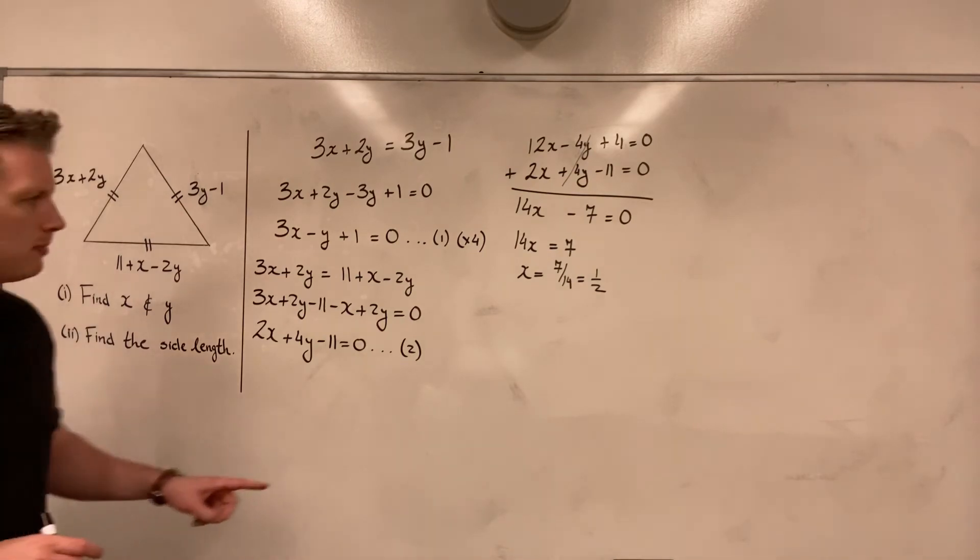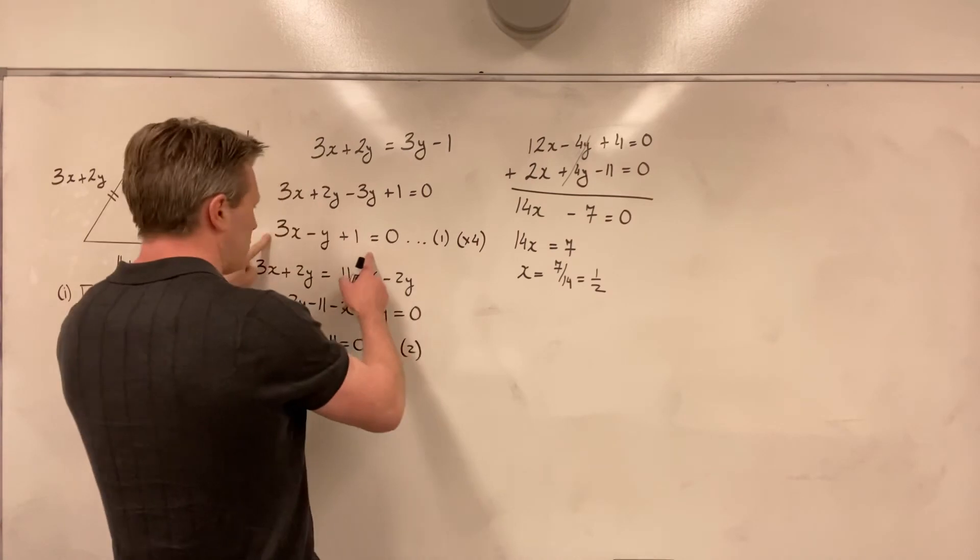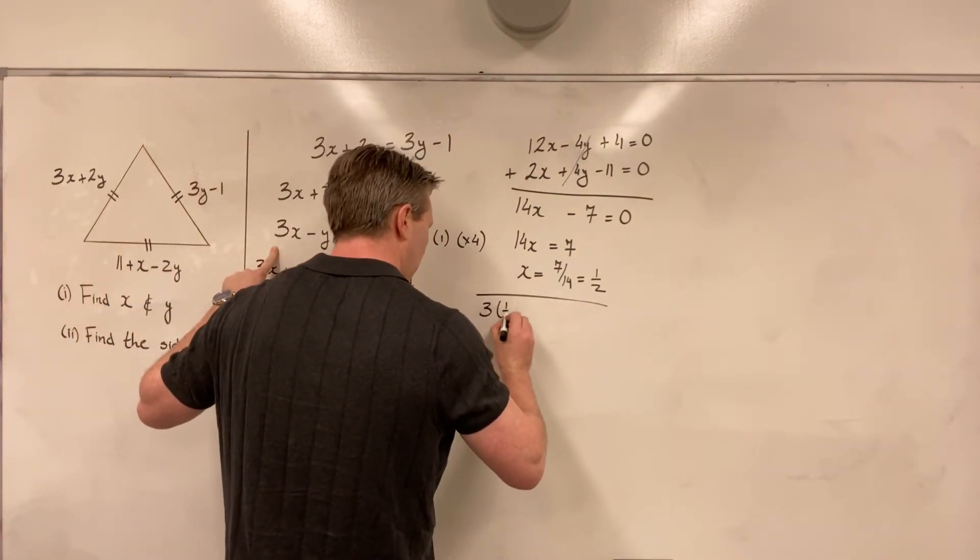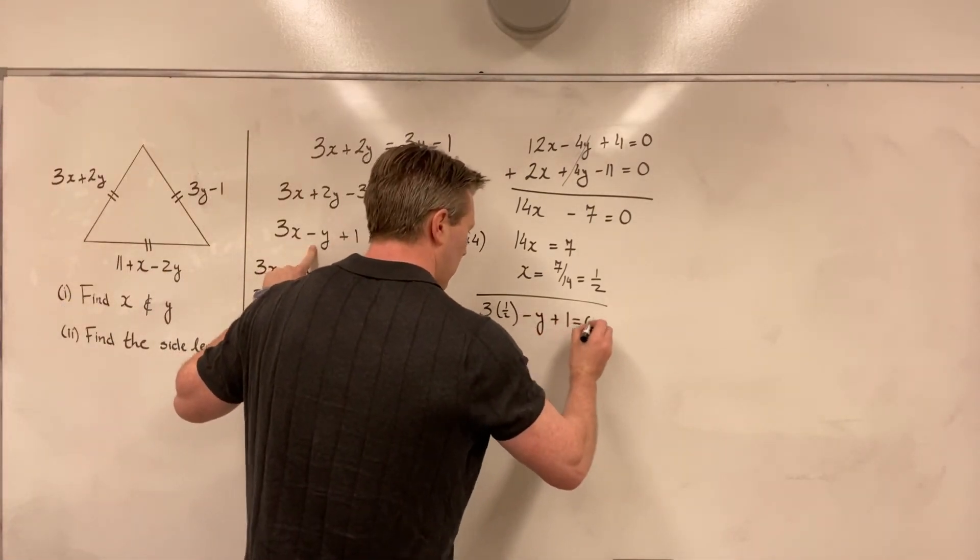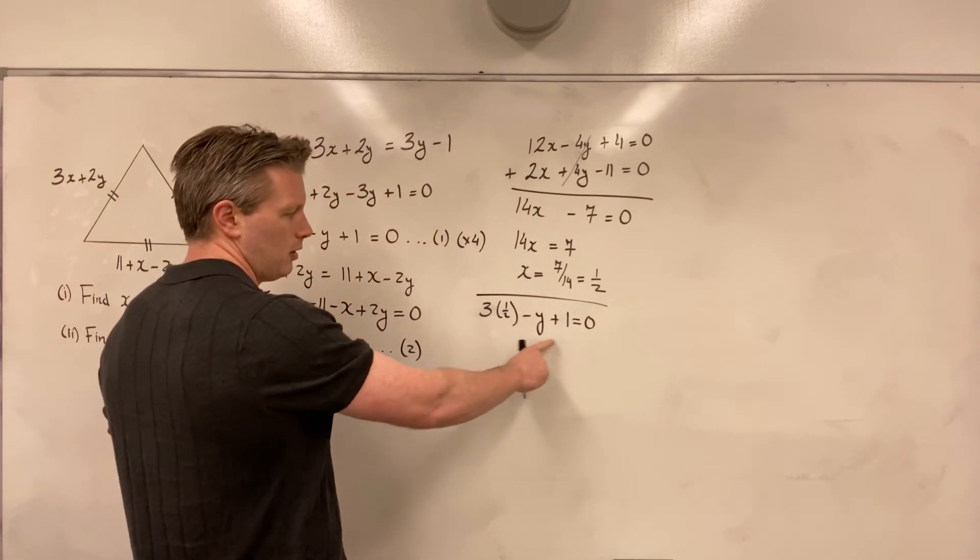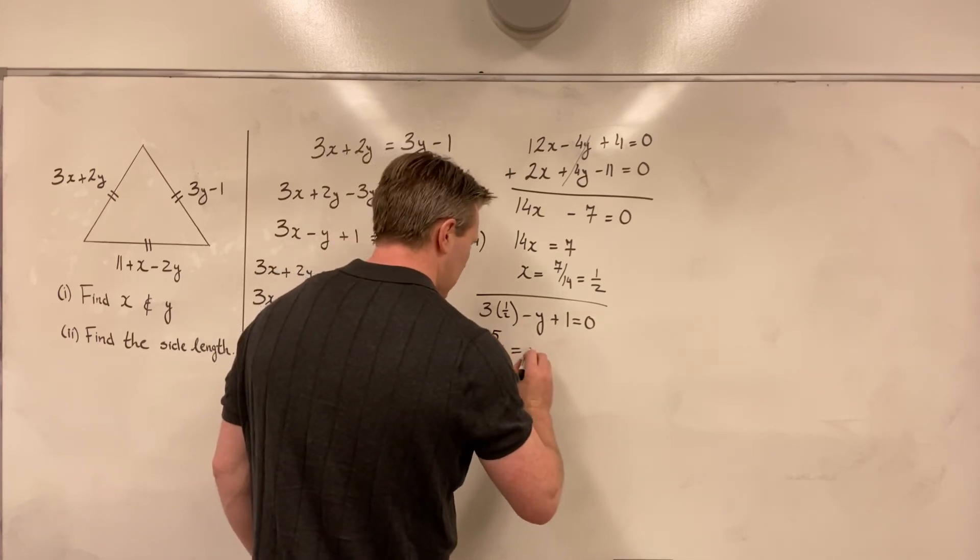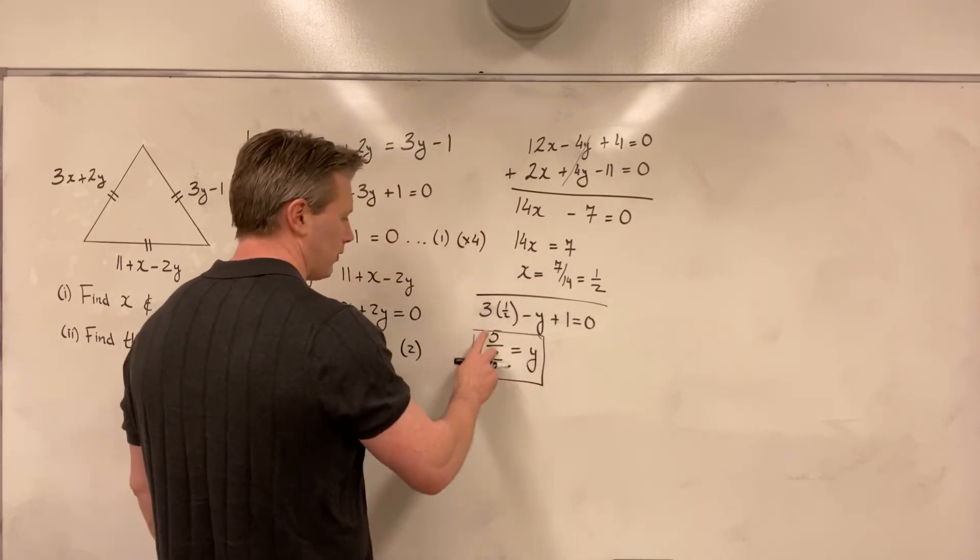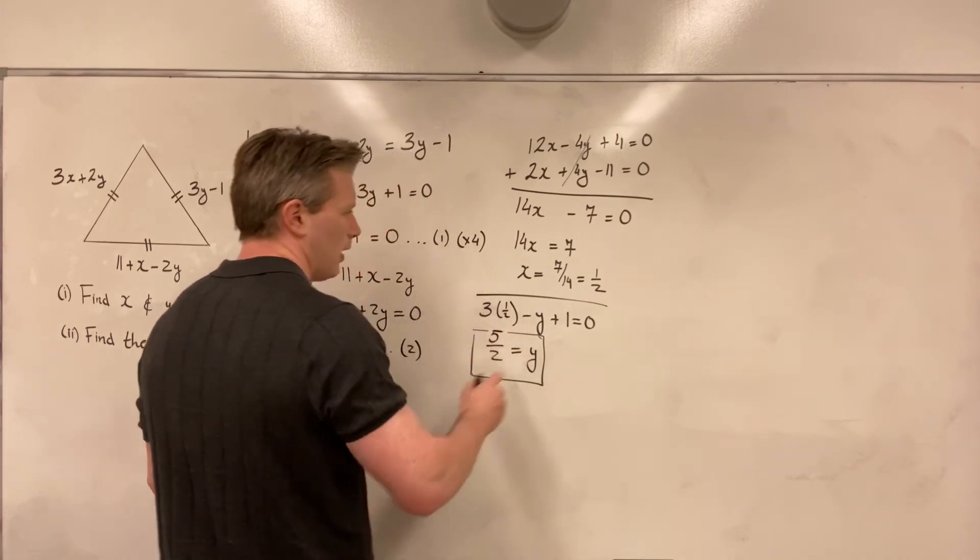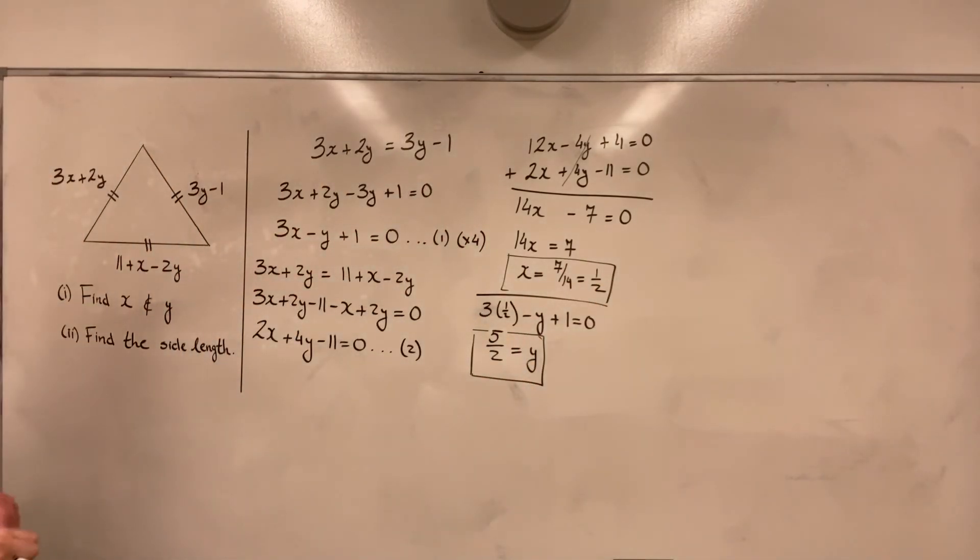Now, to solve for y, I will substitute back in my value of x into one of my original two equations. Let's put it in here. So therefore, my equation number 1 becomes 3 times 1 half minus y plus 1 is equal to 0. 3 times 1 half is 3 over 2. Plus 1 is 5 over 2. So I have 5 over 2. I'll add y to both sides. That's equal to y. So I have that y is equal to 5 over 2. And over here, I have that x equals 1 half. And those are my two values for x and y. So I've done the first part of the question. I've found x and y.